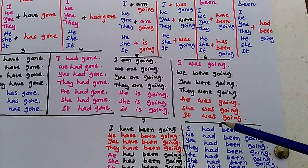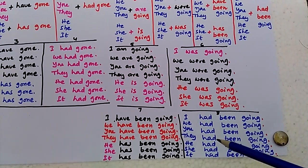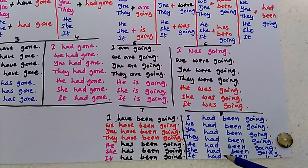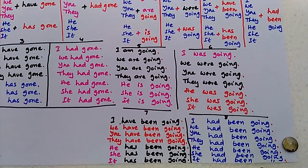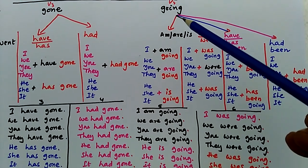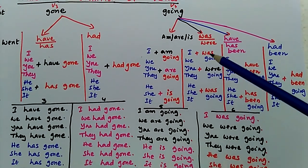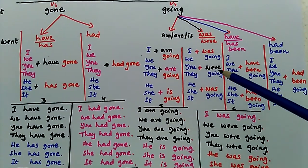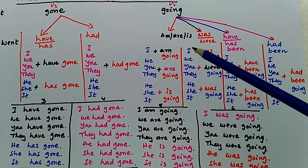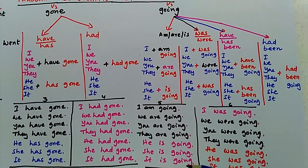By adding had been, we get the another table: I had been going, we had been going, you had been going, they had been going, he had been going, she had been going, it had been going. So for verb four, we just add am, are, is; or was, were; or have or has been; or had been. By adding these phrases, we can get the four tables.